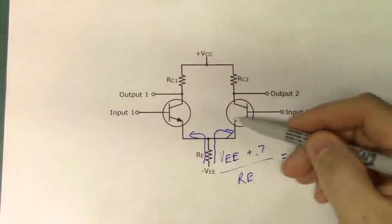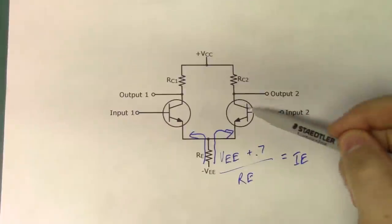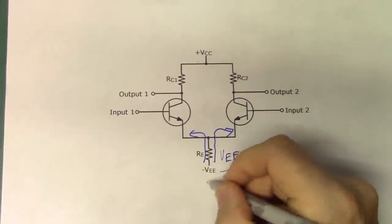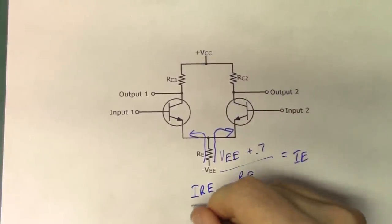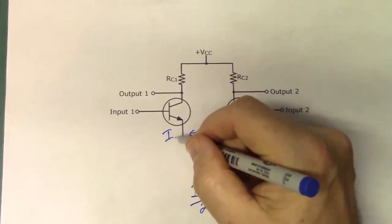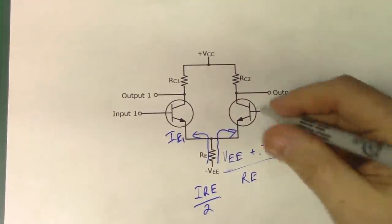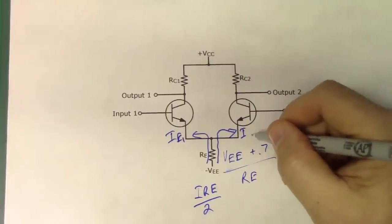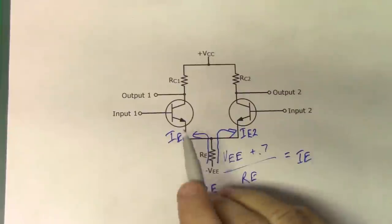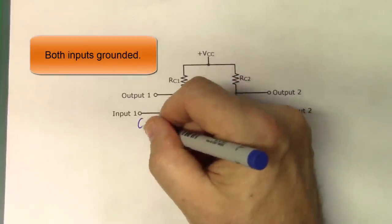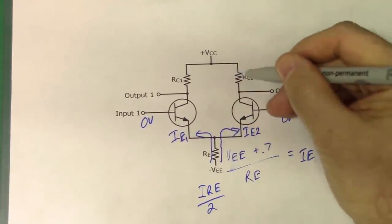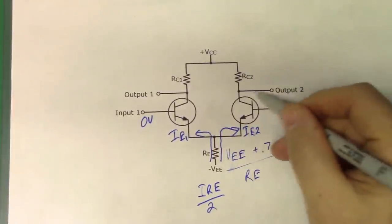Making the assumption that we have everything balanced — so our betas in both transistors are equal and the values for RC1 and RC2 are exactly equal — we know we have a total current of IRE. That IRE is divided by 2, giving us the current through transistor 1 and transistor 2. With zero volts on both inputs, we should have everything identical going through both devices, with the same voltage drop on RC1 and RC2, giving us outputs that are exactly the same.